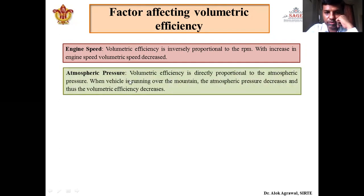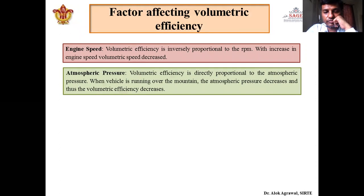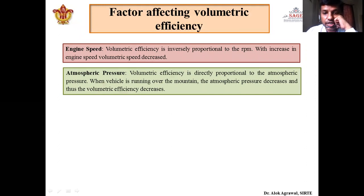Next is atmospheric pressure. Volumetric efficiency is directly proportional to atmospheric pressure — as atmospheric pressure increases, volumetric efficiency increases. This is mainly because with increasing atmospheric pressure, the density of the charge increases, and a larger mass of charge can be accommodated inside the combustion chamber. It has also been experienced practically that when a vehicle is running over a mountain, because of low atmospheric pressure, the volumetric efficiency decreases at high altitude and the engine gives lower efficiency.